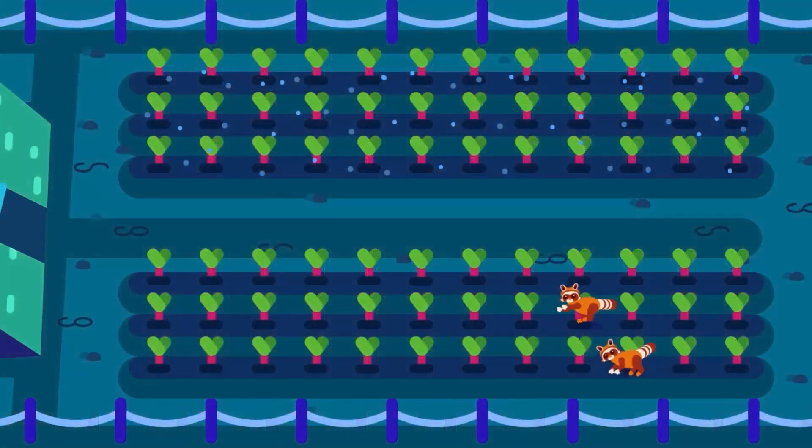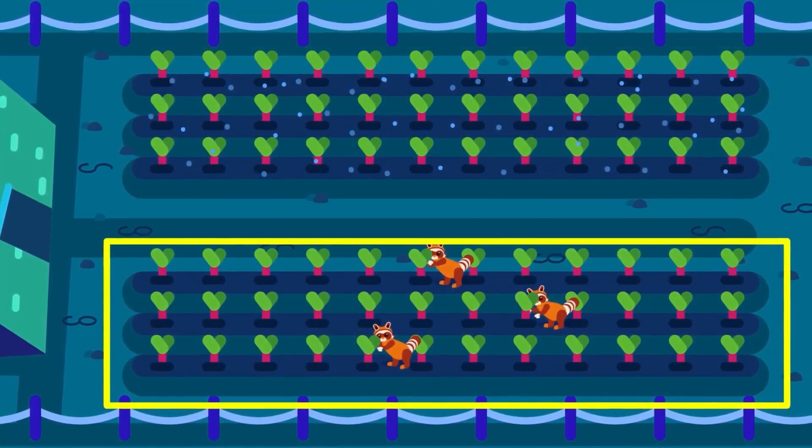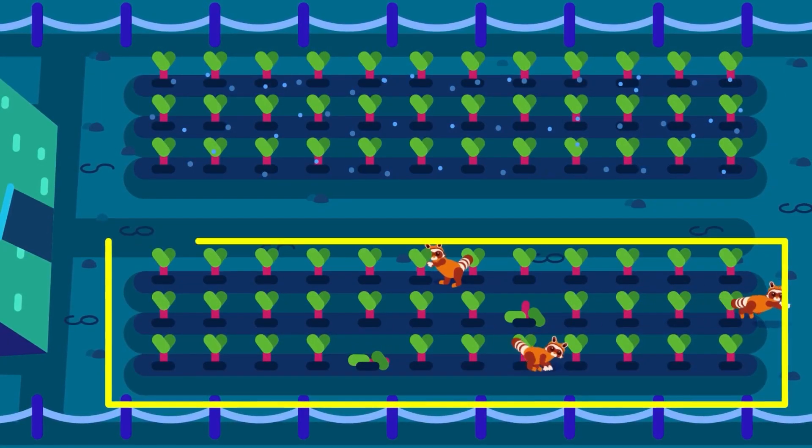So, if the raccoons return, the experimental garden should remain mostly intact, while the controlled garden should show increased damage compared to before.